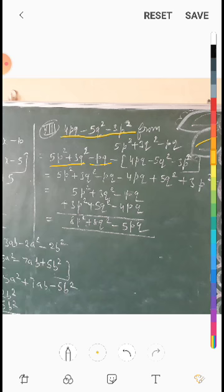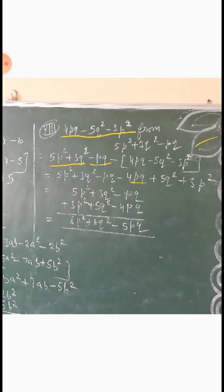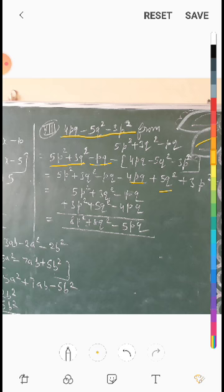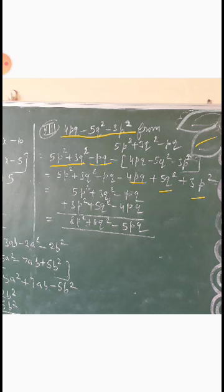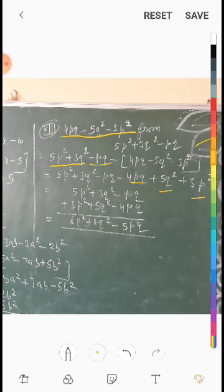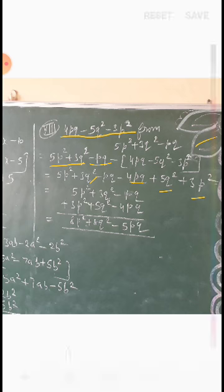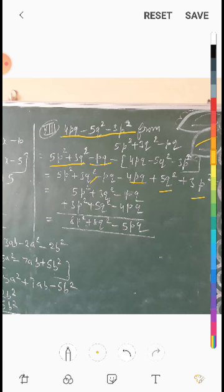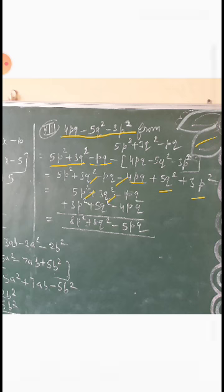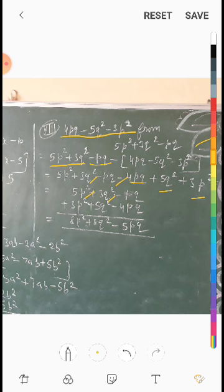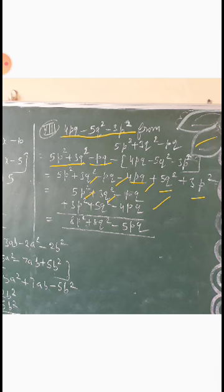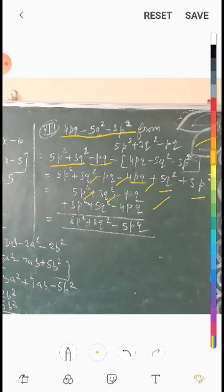minus के बाद bracket में जितने भी numbers हैं सबके sign change कर देंगे: minus 4p³ plus 5k² plus 3p²। उसके बाद like terms को एक दूसरे के नीचे लिखेंगे — 5p² के नीचे 3p², 3k² के नीचे 5k², minus p³ के नीचे minus 4p³.